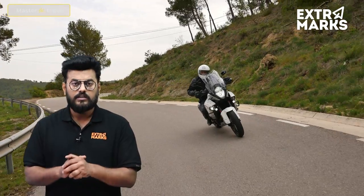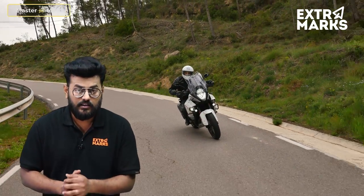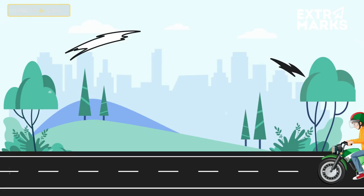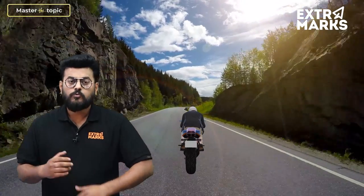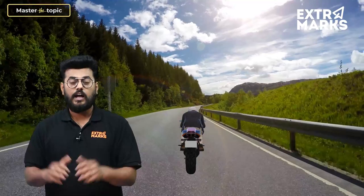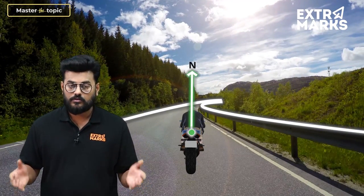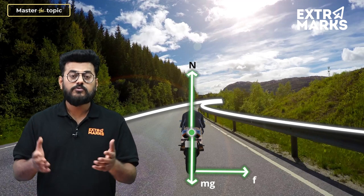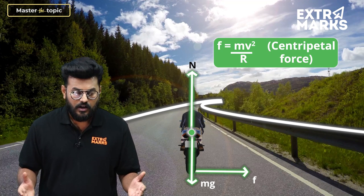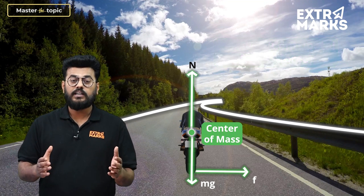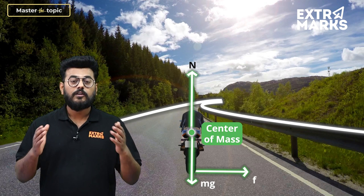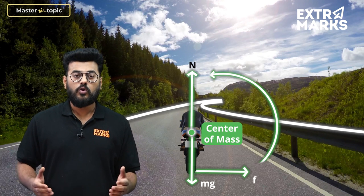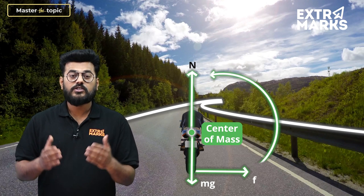Let us consider a situation where we have a bike making a turn of radius R, and in this case let us suppose the bike is not bending. What forces are actually acting on the bike at this moment? There will be a normal force, an Mg force, and obviously a friction force which will be providing the necessary centripetal force. If you look closely about the center of mass of the bike, the friction force is providing a net external torque, and there is no other torque balancing this friction torque.